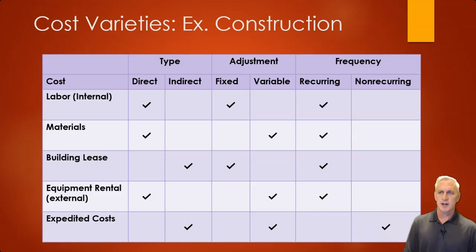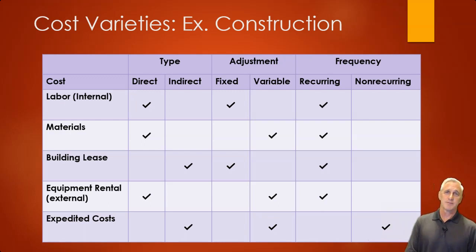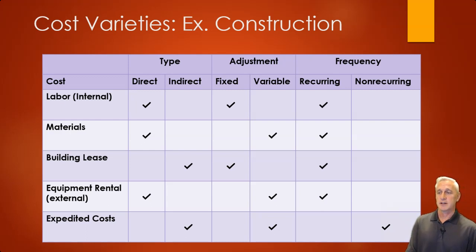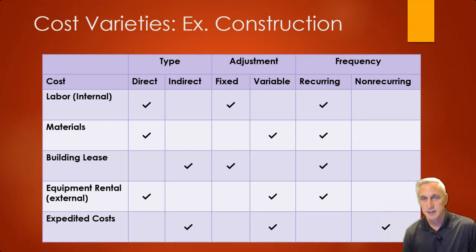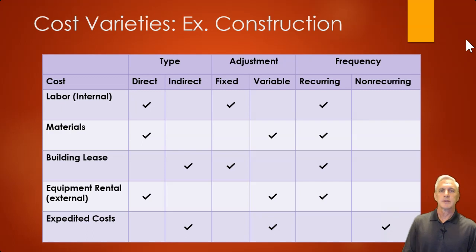Here's a table of different types of costs and where things fall. Some people argue certain items — certain materials may be variable or fixed depending on quantity and time. Building leases are typically fixed. Equipment rentals can be variable because you may rent based on units used. Direct labor and materials directly on the project are typically direct costs. Building leases and other external factors are indirect. Expedited costs are indirect and variable based on need, and they don't always occur in every project. Understand the differences between cost types — fixed or variable, recurring or non-recurring.